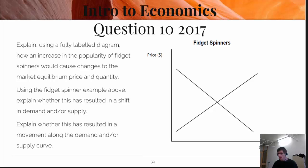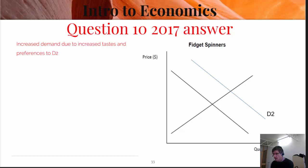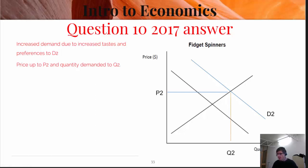Here's our first question looking at the market for fidget spinners. In the first instance you had to say what happens to this particular situation. It increases demand to D2 as shown and what you also have to do is to talk about the price and the quantity. Importantly, you have to put these items up on the graph. You can see that the price has increased to P2 and we've got an increased quantity to Q2. Q1 was there and P1 was there. So we have an increase.